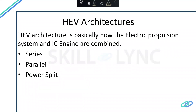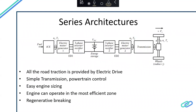HEV is something where traction forces from the engine and an electric drive are combined. Depending on how they are combined, we have three different architectures. They can be broadly classified as series, parallel, and power split. We'll go into them in the following slides.